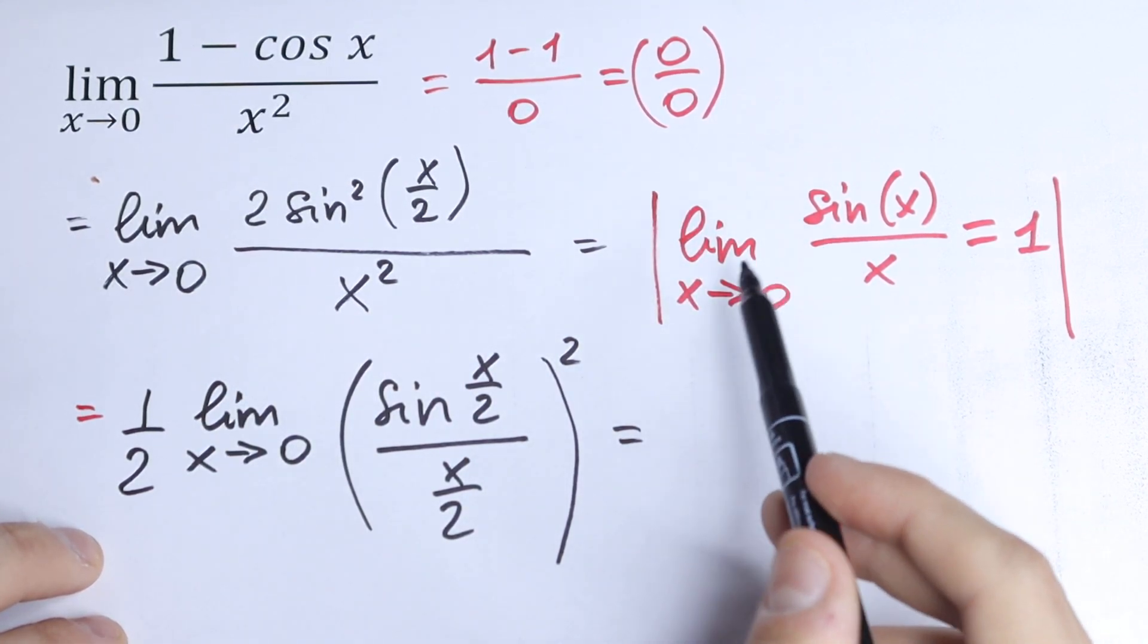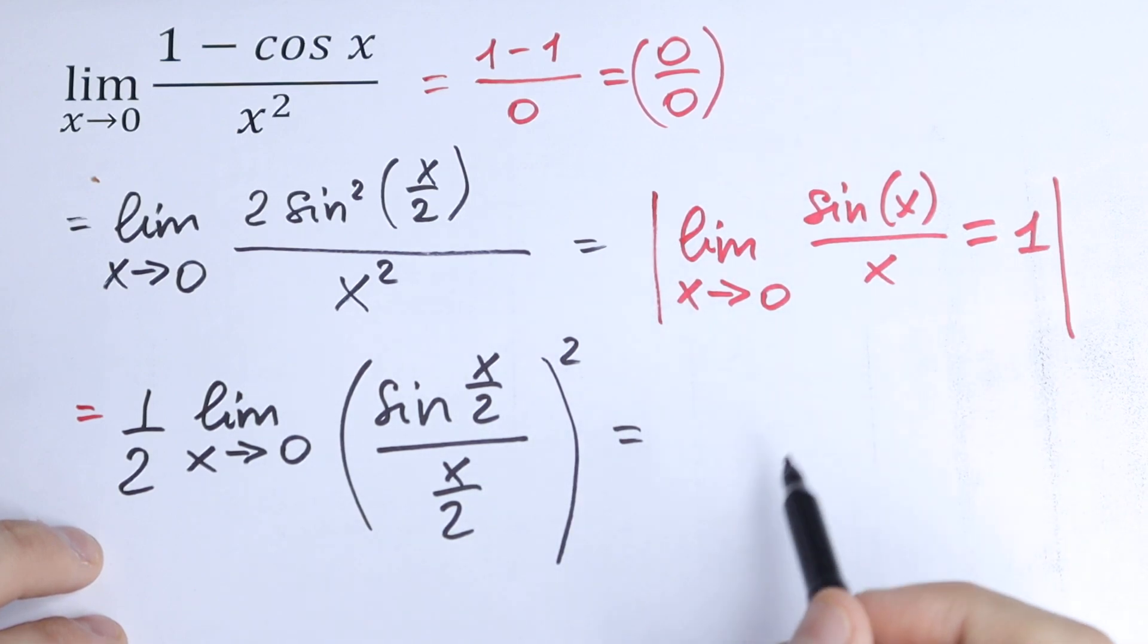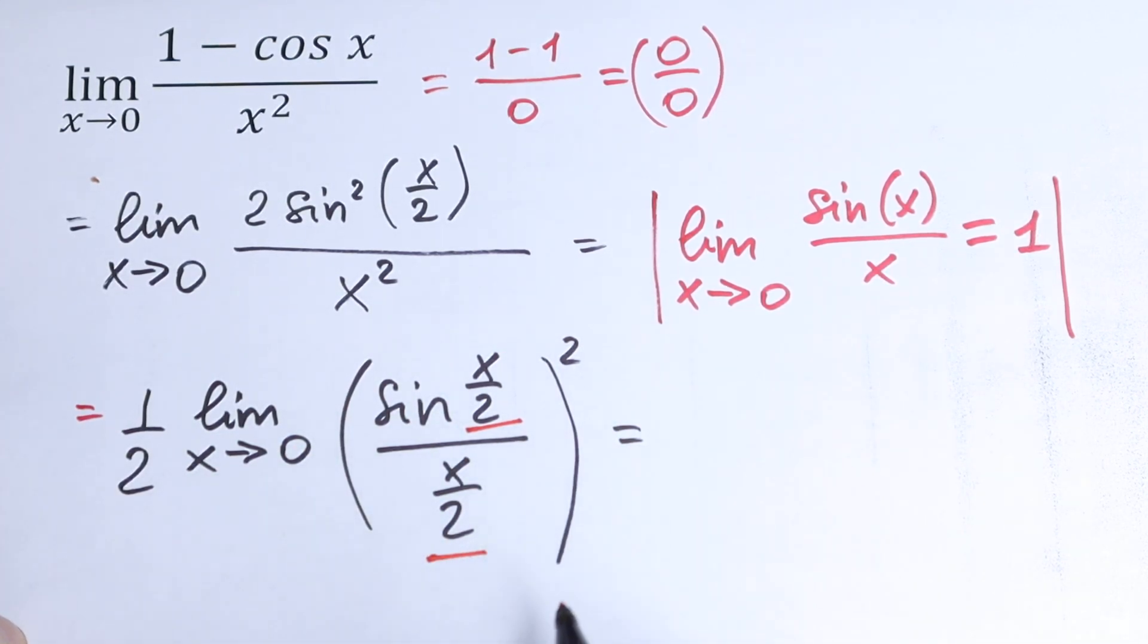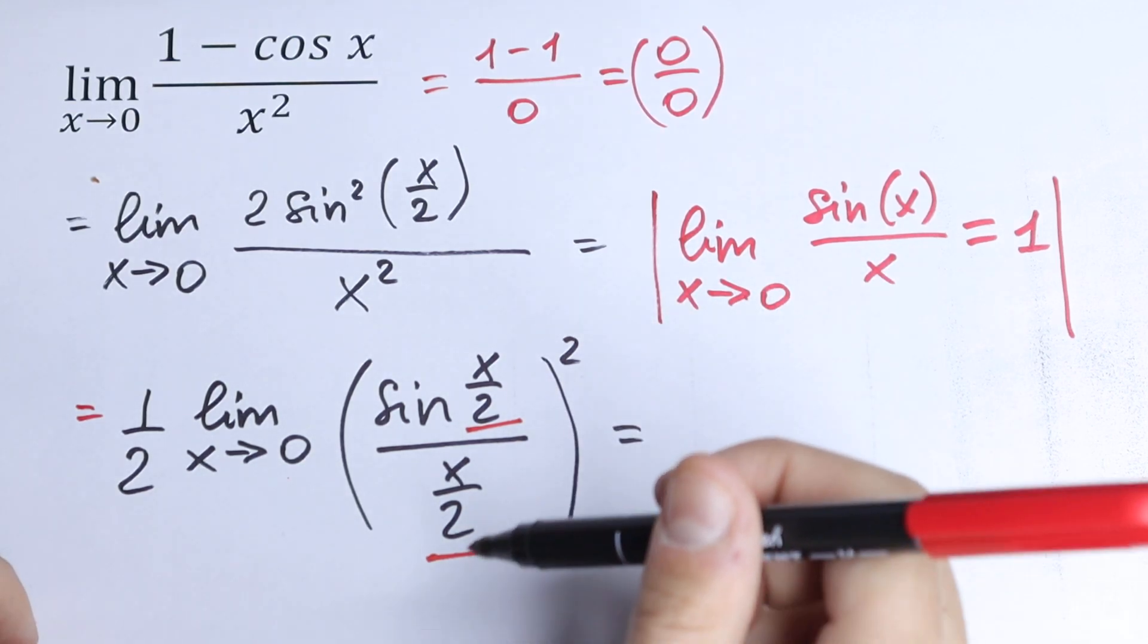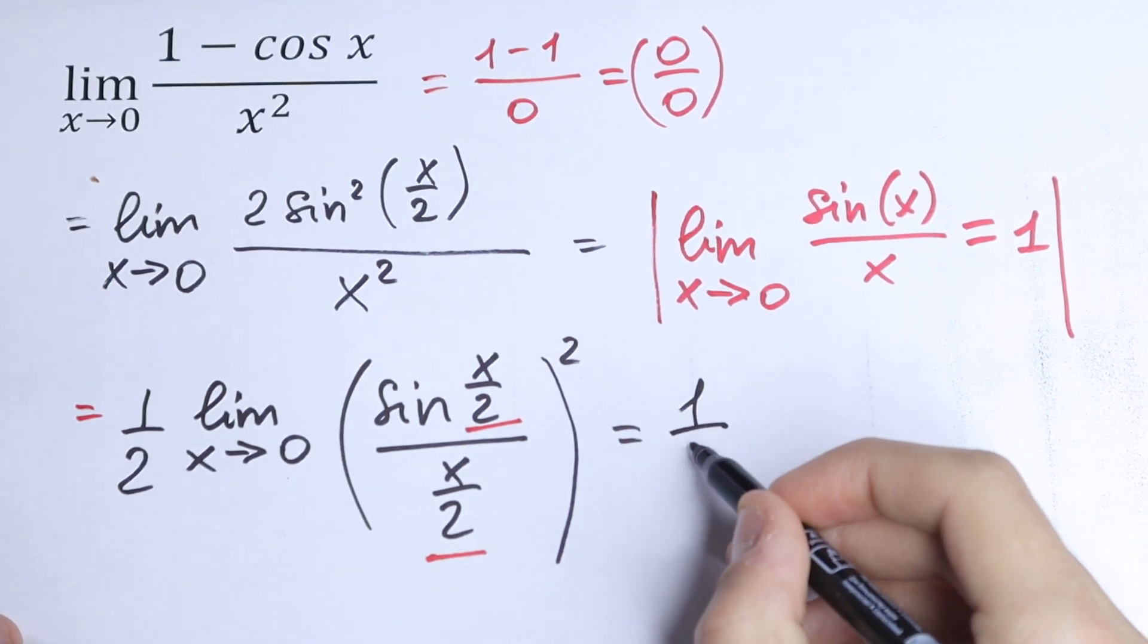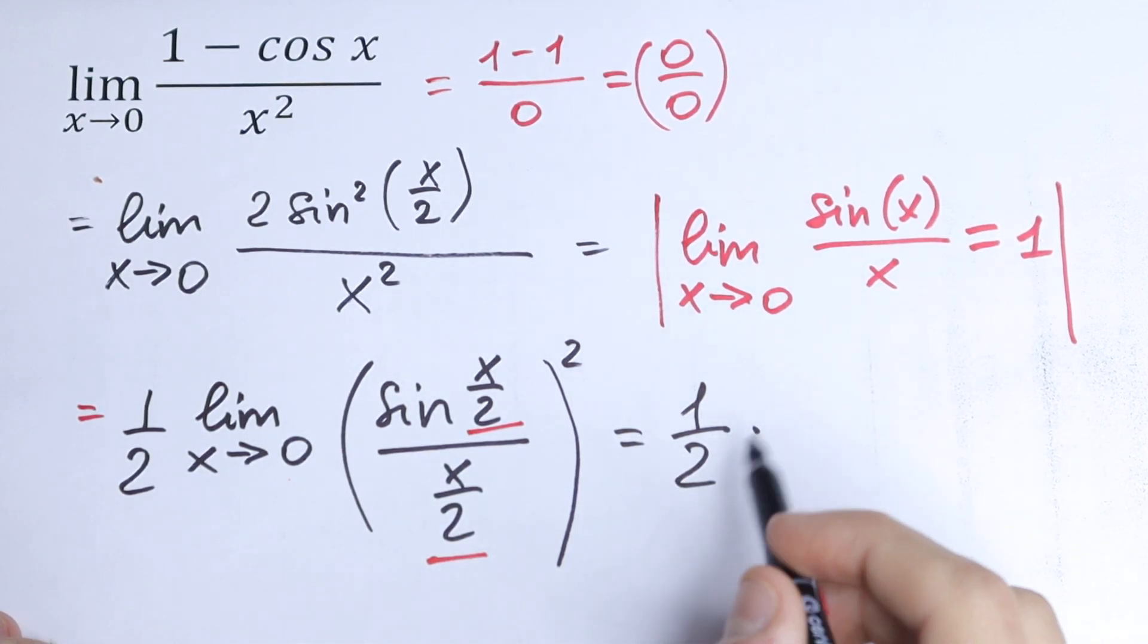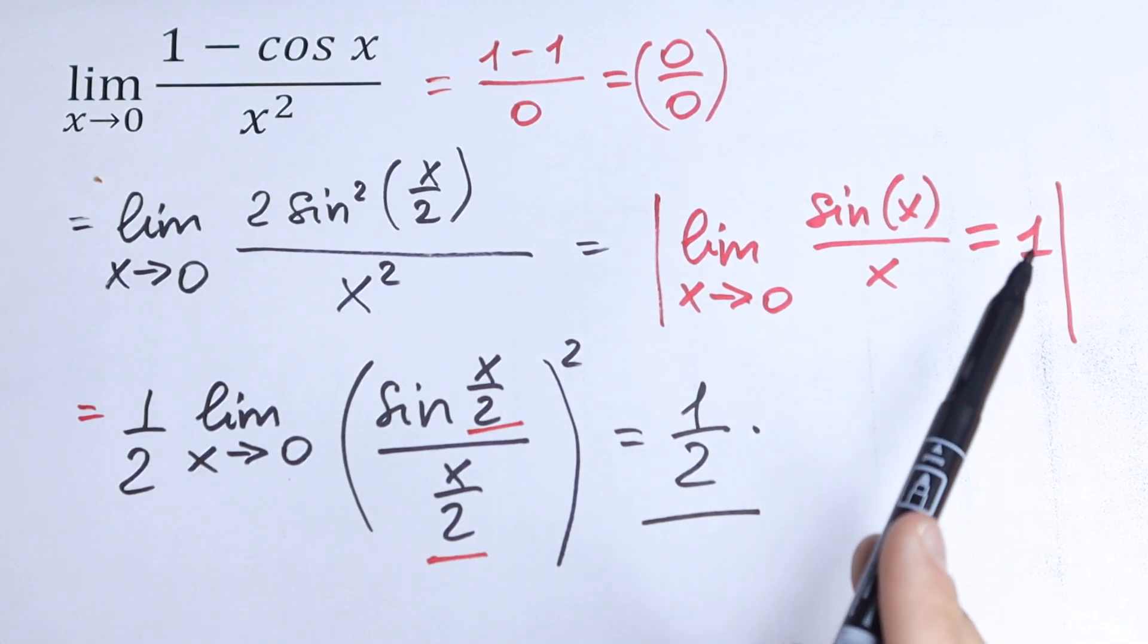Now we can evaluate this limit. We have the same x/2 in the numerator and denominator, x approaches 0, and we just have it squared. So we will have 1/2 times the limit, which is 1 squared, so this equals 1/2. And this is our answer.